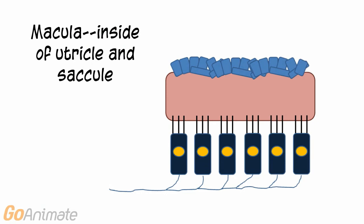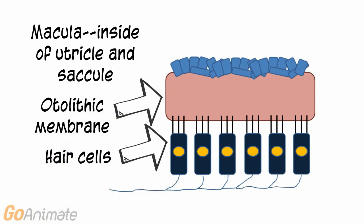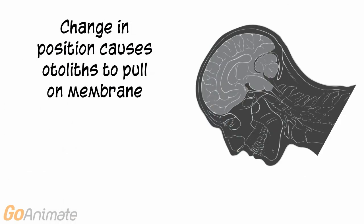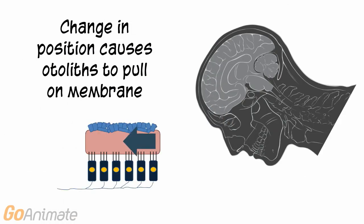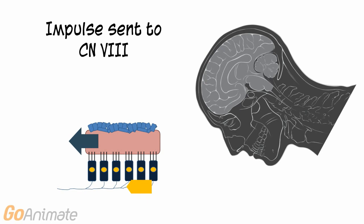Here is a more detailed picture of the macula. The macula contains a membrane called the otolithic membrane, and hair cells are connected to the membrane. A series of small crystalline structures called otoliths sit on top of the membrane. When the head changes position, the otoliths pull on the membrane, causing the tiny stereocilia on the hair cells to bend. The bending of the hair cells is converted to impulses that travel to cranial nerve 8 and to the brain for processing.